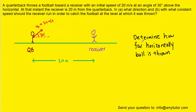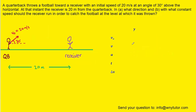So in essence, our goal is to determine how far horizontally the ball is thrown. That's going to tell us in which direction the receiver should travel. And it turns out that in order to determine how far horizontally the ball is thrown, we actually need to find the time of flight first. And in order to find the time of flight of the ball, we're going to consider the information in the y direction.